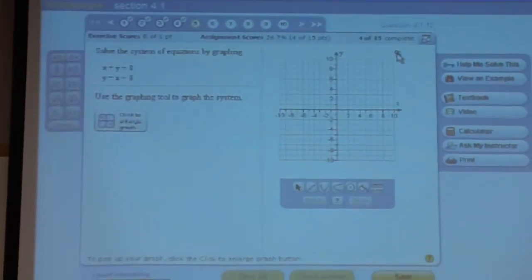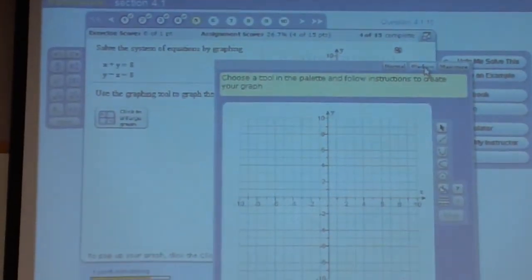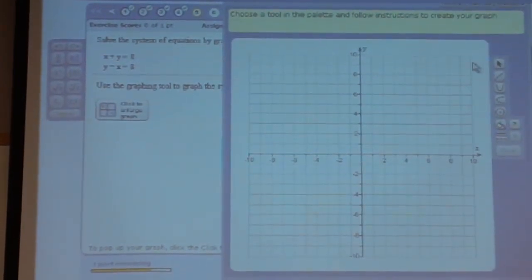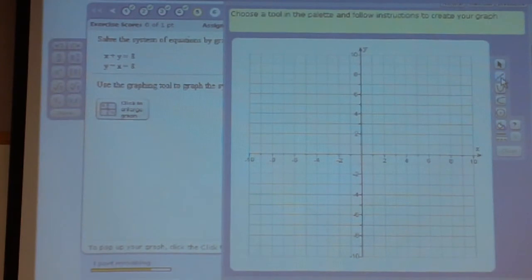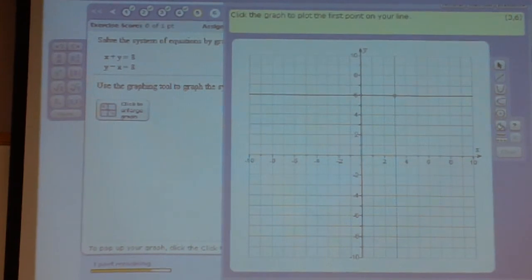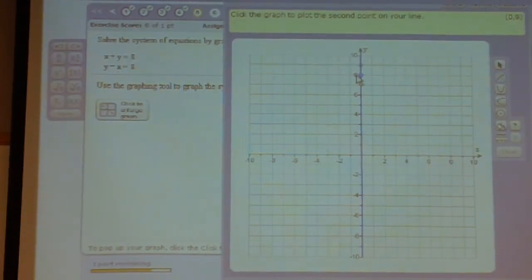First I'll click on the magnifying board, so it makes it a little larger. Then we'll click on the line tool. Now let's graph the first line. The y-intercept of the first line is positive 8. Now we're ready to rise 1 and run 1 to the left. There is our first line.